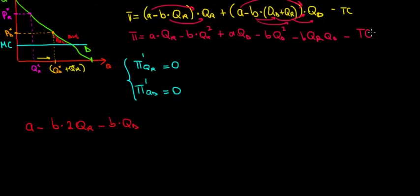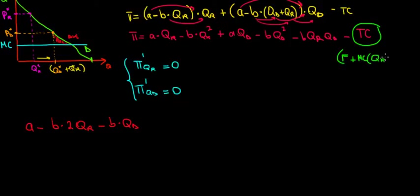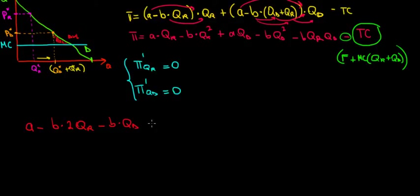Now from the total cost — let me write that out so we know what we're differentiating — we have a fixed constant, plus marginal cost times the quantity of the regular customers plus the quantity of the discount customers. Differentiating with respect to qr: the fixed cost is a constant, so that's zero. Marginal cost times qr, differentiated with respect to qr, becomes just marginal cost, with the negative sign in front — so minus marginal cost.